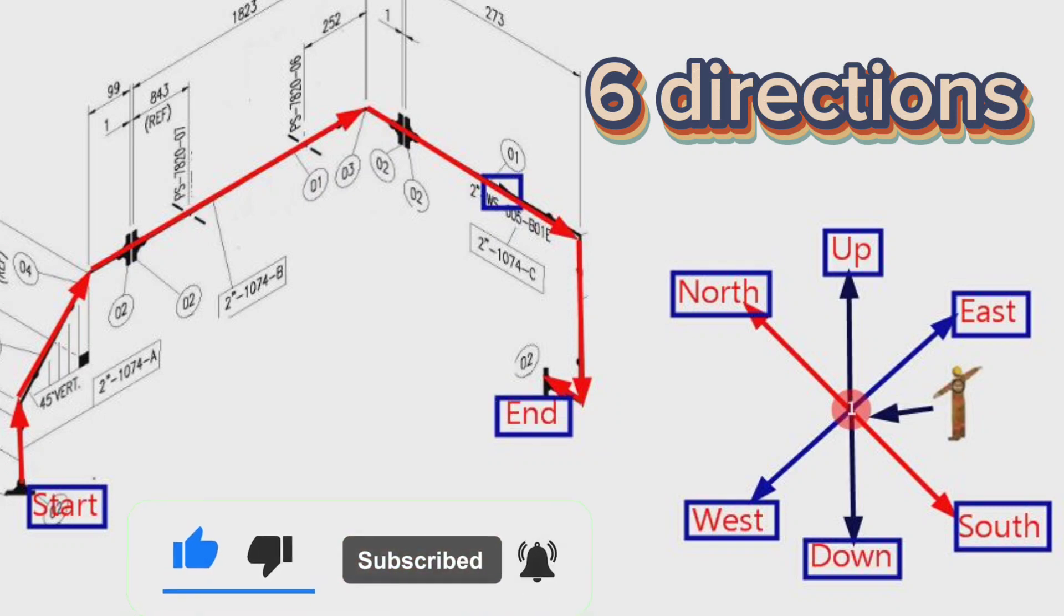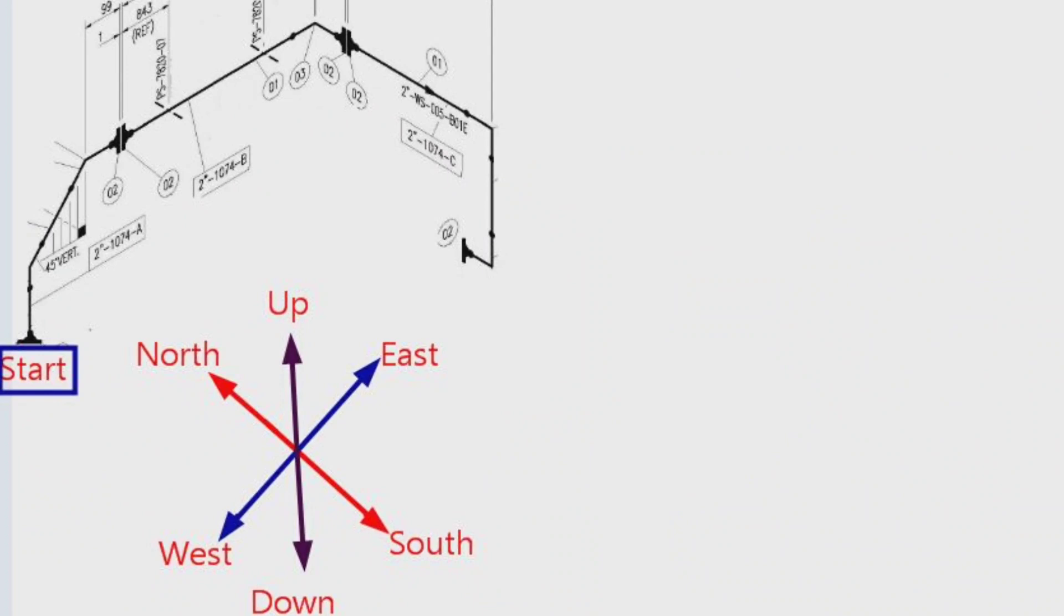Now let's bend the wire of this pipeline. The wire bending process is the same as the isometric reading process. We hold the wire in a vertical direction. Then we bend the wire at an angle of about 45 degrees to the east direction and then lift it up vertically.